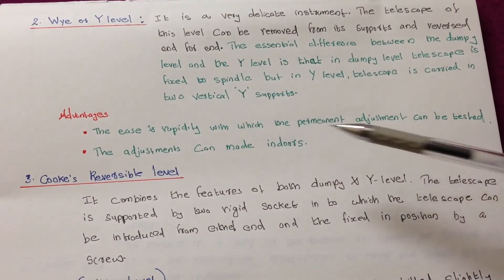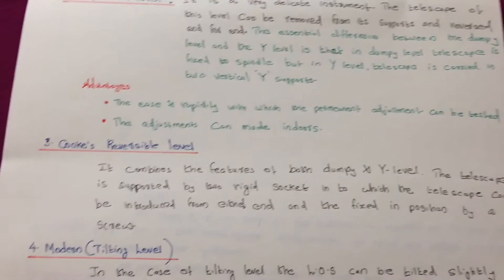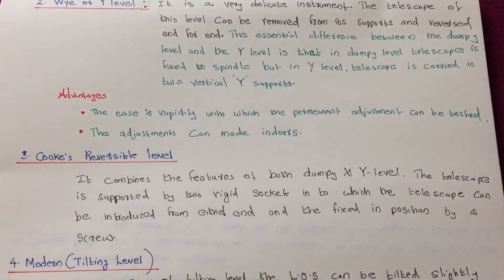The adjustment can be made indoors. These are the two advantages. It has great ease and rapidity and it can be adjusted when we can also make it indoors also. So let's next move to the next level that is called Cook's reversible level.